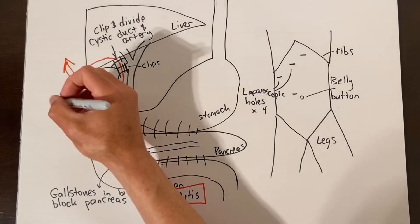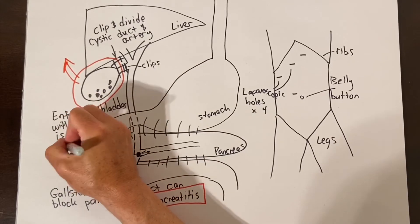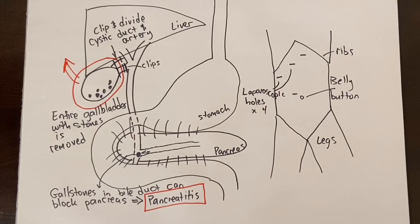Then the loose attachments of the gallbladder to the liver are divided using an electrical cautery device. The entire gallbladder that contains the stones is removed. It does not make sense to open up the gallbladder and just take out some stones because they will reform in the future.